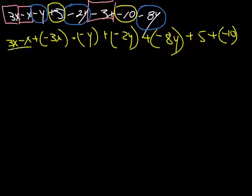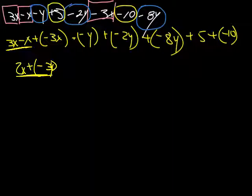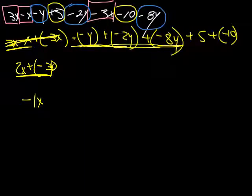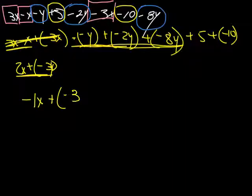So 3X minus X is 2X. Then 2X plus negative 3X — signs are different, so take the difference and put the sign of the largest one there, getting rid of all those X terms. For the Y terms: we have negative X plus negative 2 — signs are the same so we add them, 1 plus 2 is 3, giving us negative 3Y. And there's still one more Y term to handle.